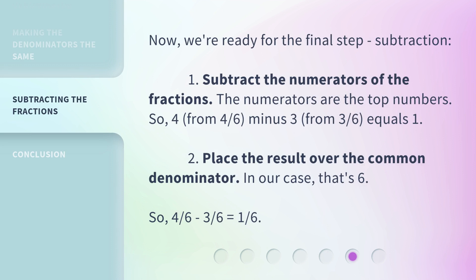Now, we're ready for the final step, subtraction. 1. Subtract the numerators of the fractions. The numerators are the top numbers. So, 4 from 4 sixths minus 3 from 3 sixths equals 1. 2. Place the result over the common denominator. In our case, that's 6. So, 4 sixths to 3 sixths equals 1 sixth.